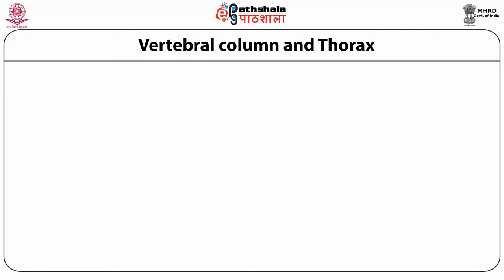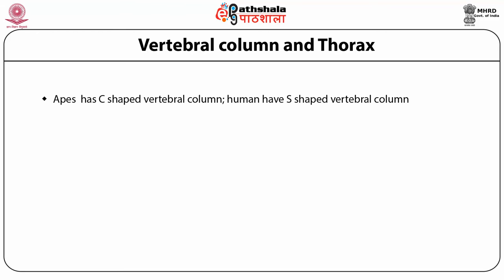Now let's discuss about the vertebral column and thorax of man and apes. The vertebral column is made up of a series of bones called vertebrae joined together, divided into four regions: cervical vertebrae in the neck region, thoracic vertebrae in the thoracic region, lumbar vertebrae in the lower back, and the sacrum-coccyx region in the pelvic region. In apes, the vertebral column has a single curve forming a C-shape, making the thoracic region slightly convex. But in humans, it is S-shaped by adding two secondary opposing curves in the cervical and lumbar regions to the C-shaped curve of apes.